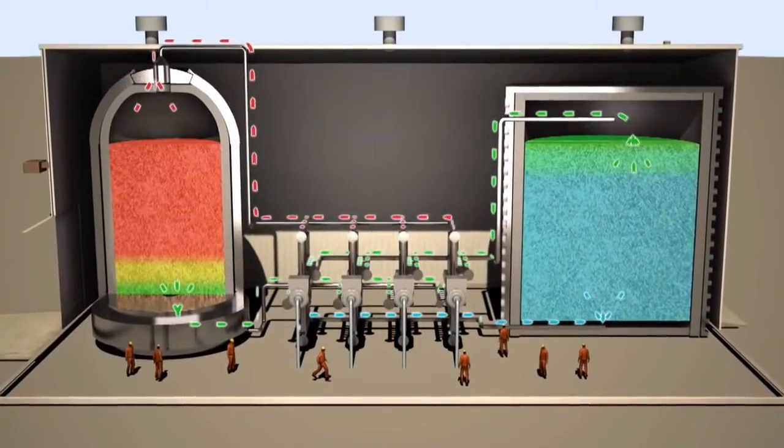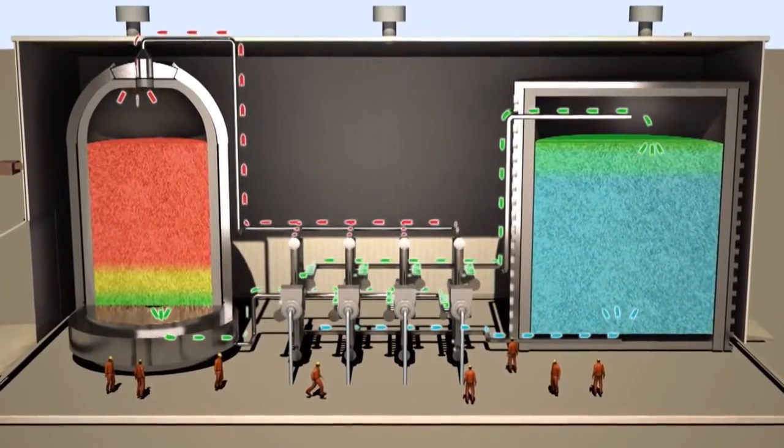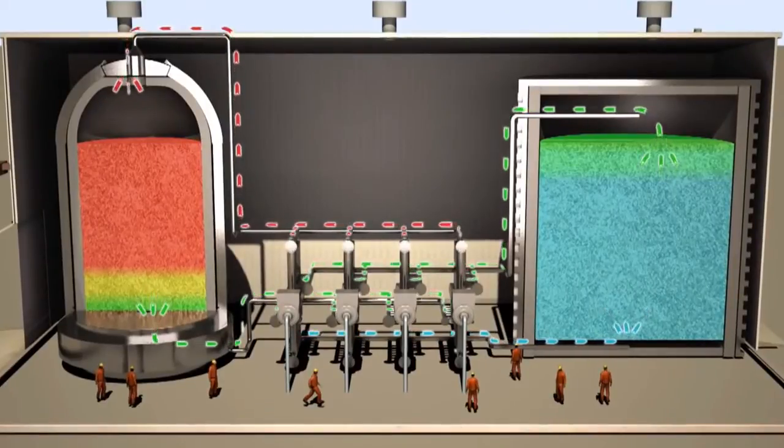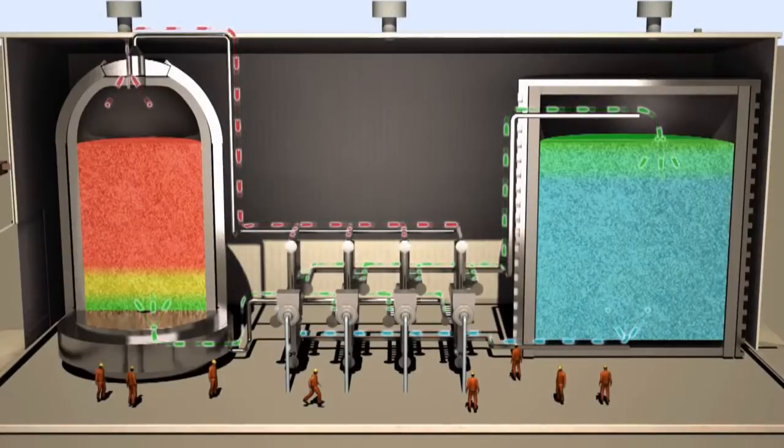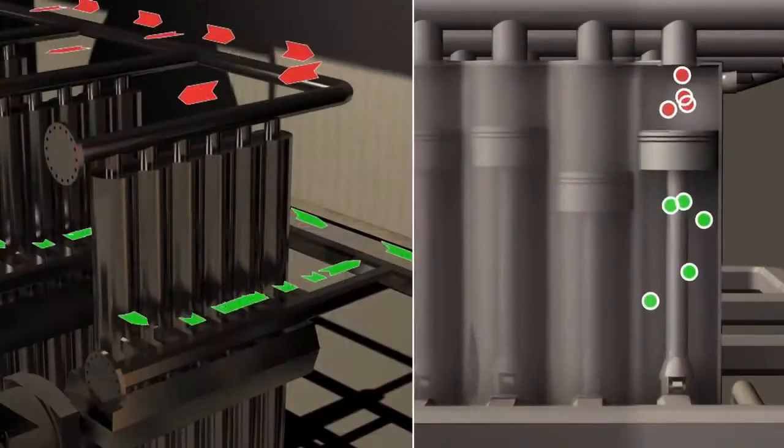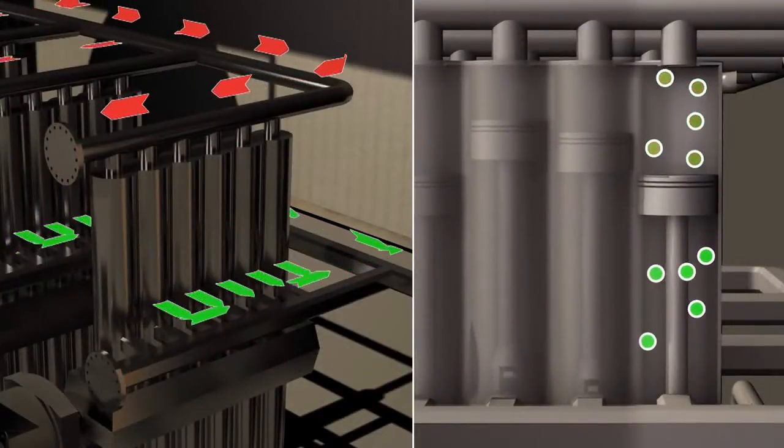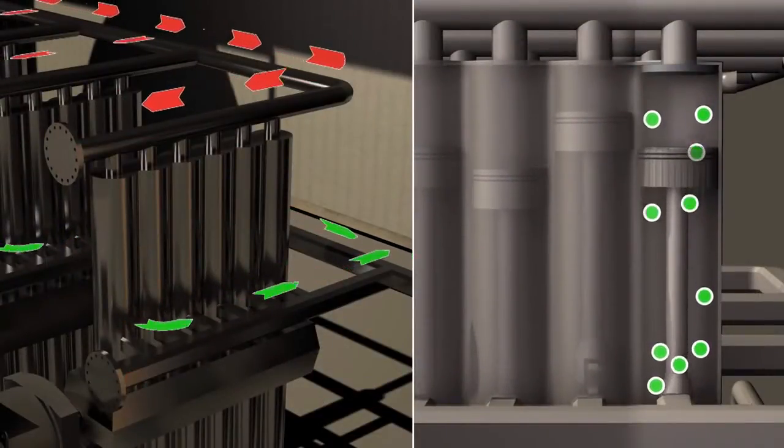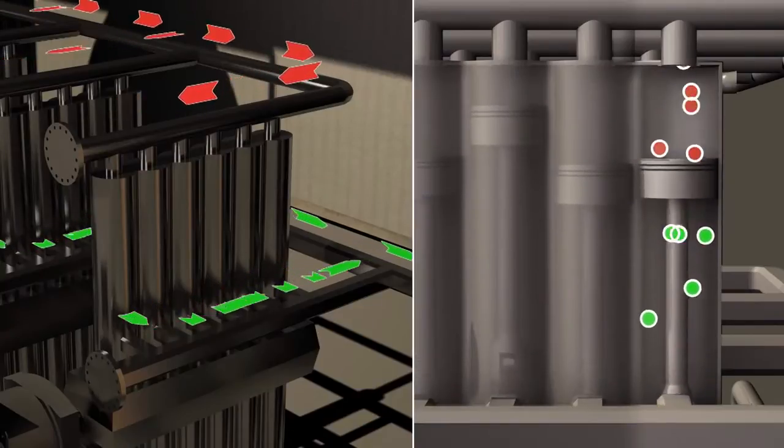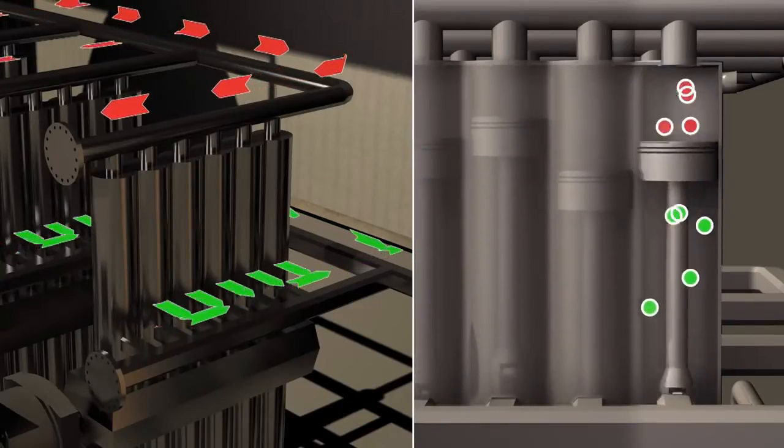At any time during the charging cycle, the system can be reversed to start the discharging cycle and release the stored energy. This is done while the engine continues to turn in the same direction. The valve timings are changed and the gas begins to flow in the opposite direction, a process which only takes about one second.